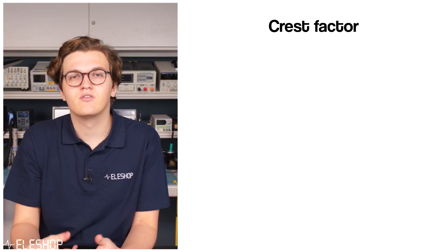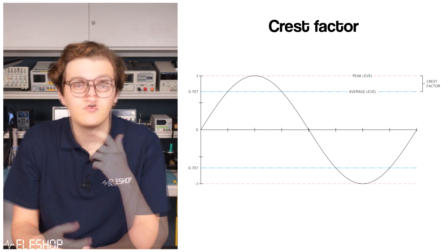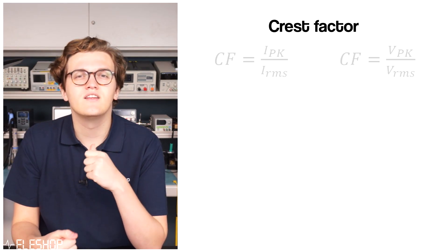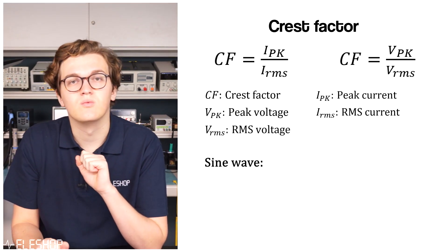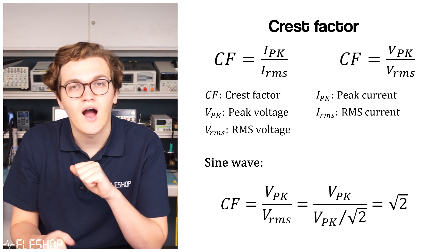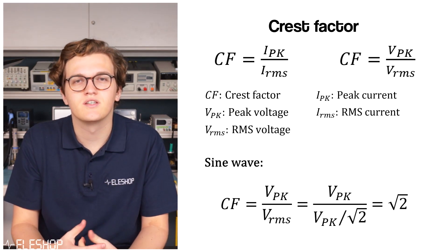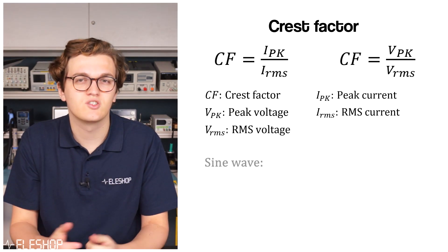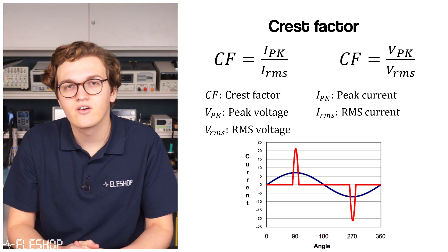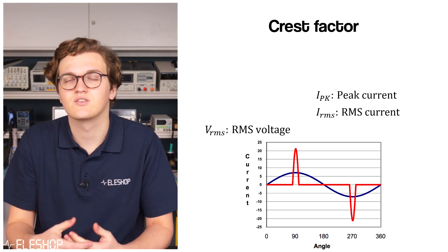The crest factor is a parameter of a waveform that shows the ratio of peak values to the RMS value. In other words, the crest factor indicates how extreme the peaks are in a waveform. For a perfect sinusoidal wave, the peak value is a square root of 2 higher than its RMS value. However, for some loads such as switching power supplies or lamp ballasts, the current waveforms are not always sinusoidal — they draw a high current for a short period of time, and their crest factor therefore can be quite higher than the square root of 2.